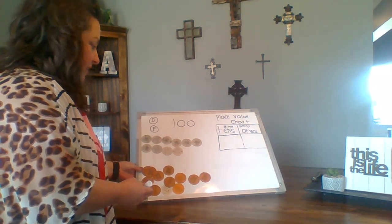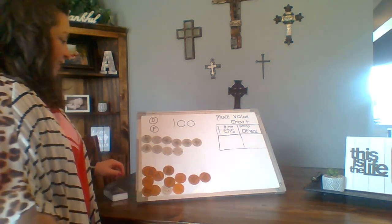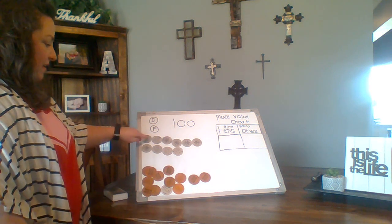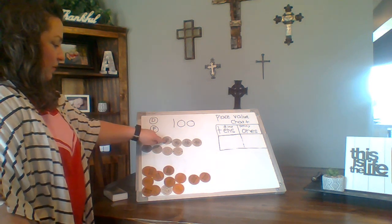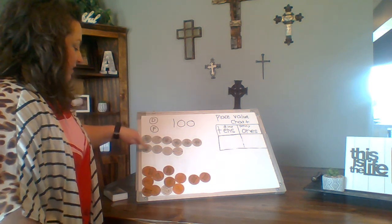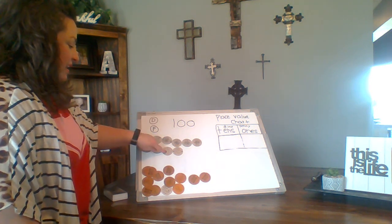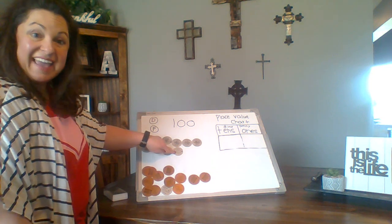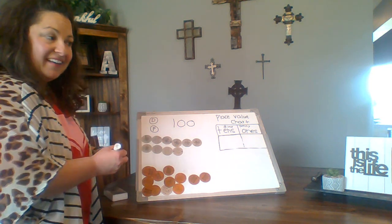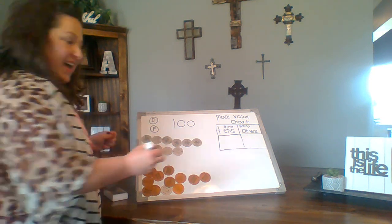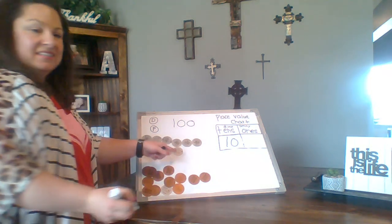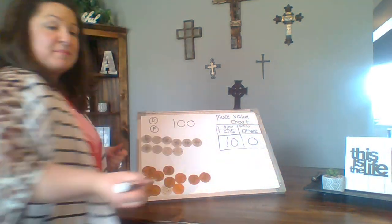So let's count our tens: 1, 2, 3, 4, 5, 6, 7, 8, 9, 10. Did you get that? There are 10 tens and 0 ones. That's the number 100.